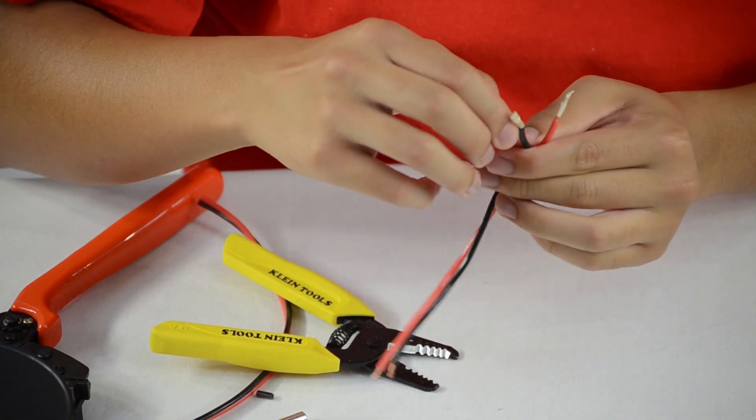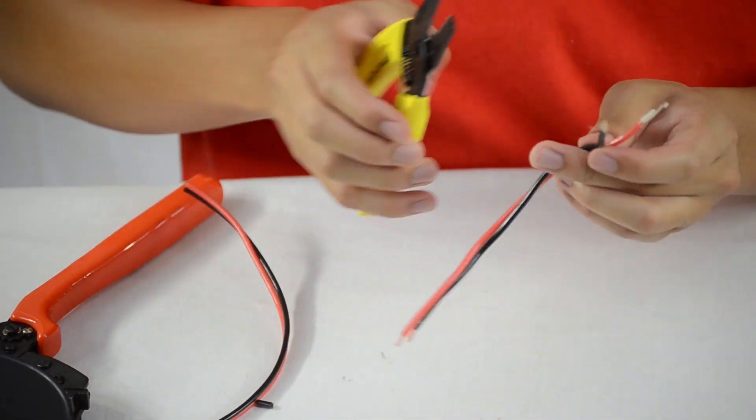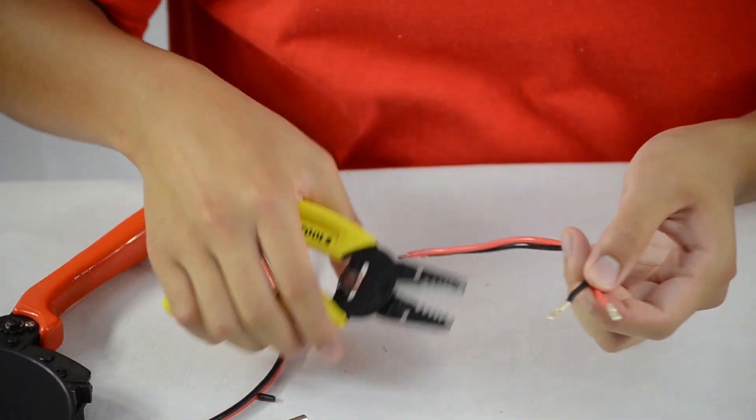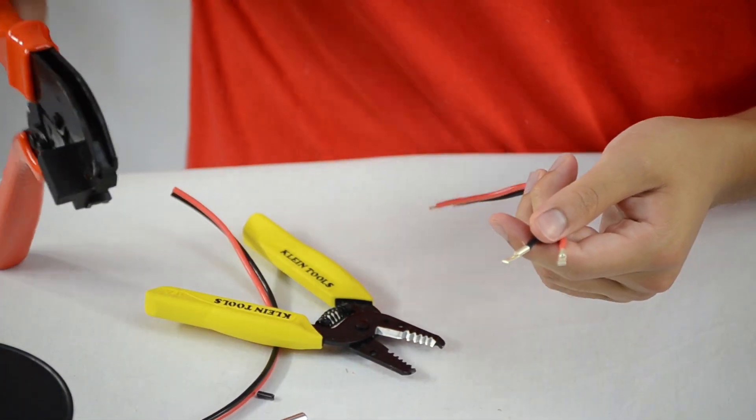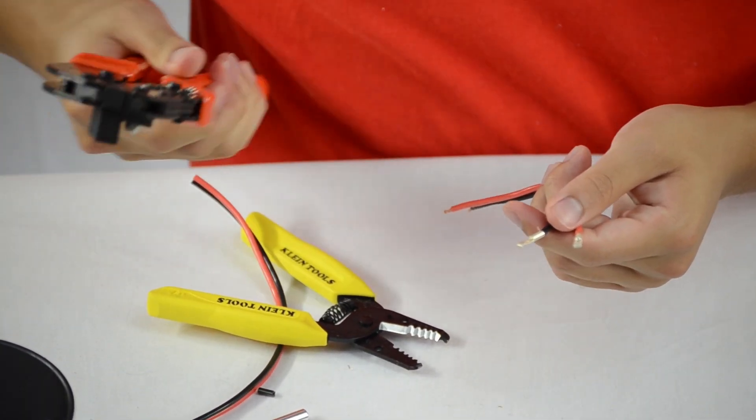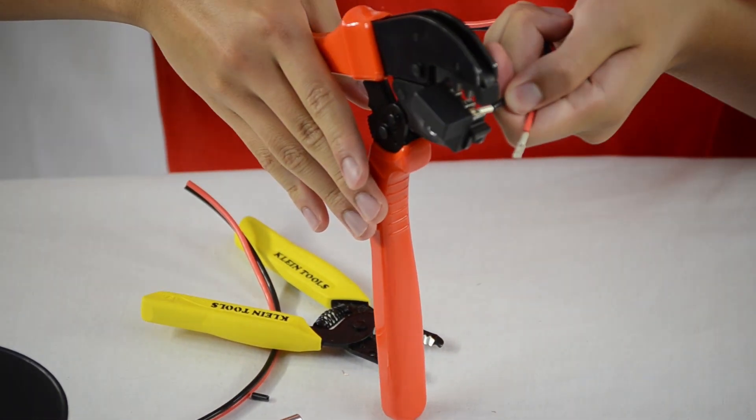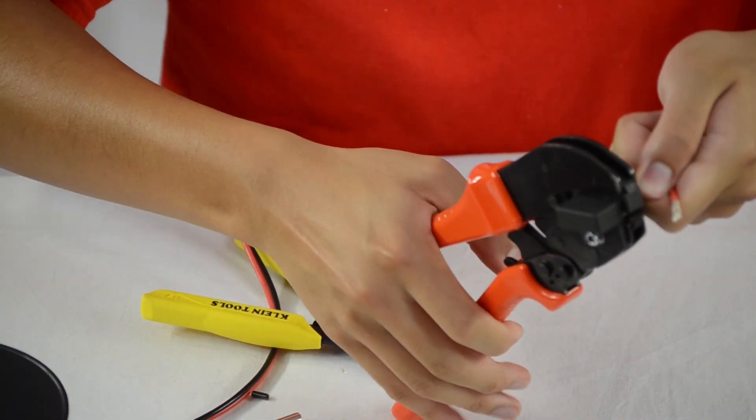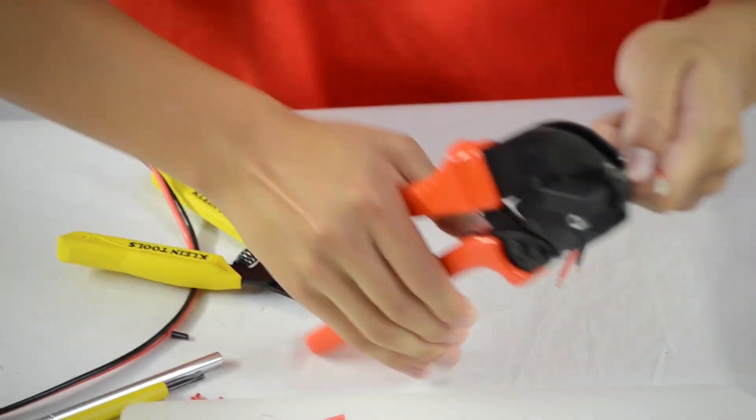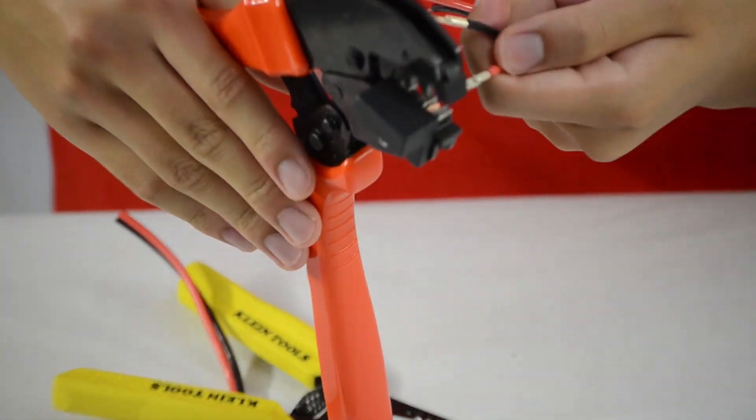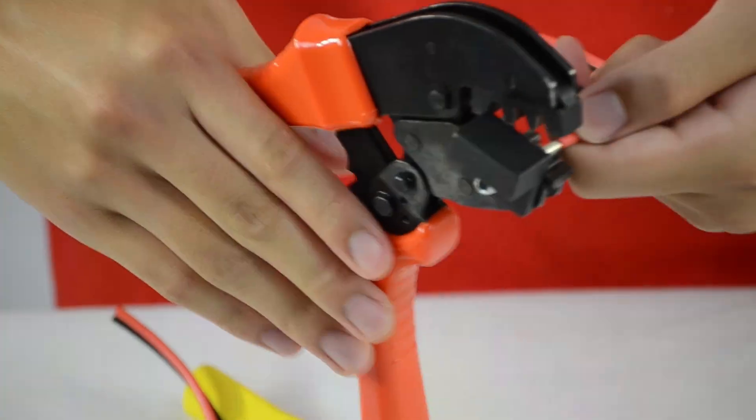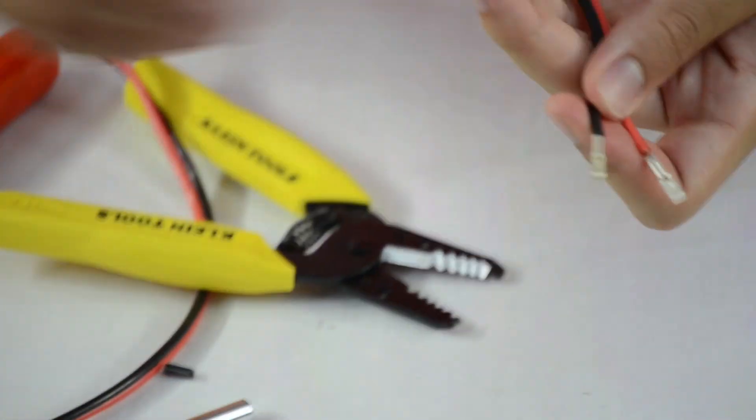And if you do by any chance get a loose wire, you can just cut it off. And now crimp these. And just do that same thing to the other side.